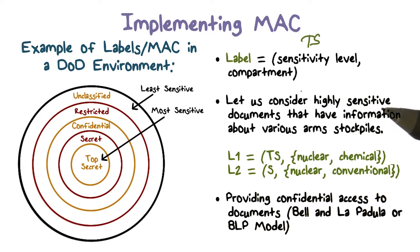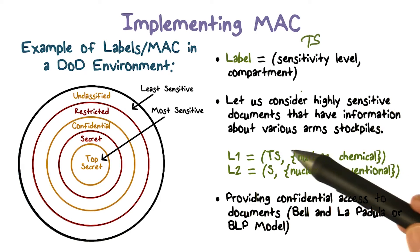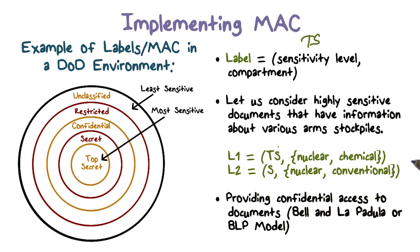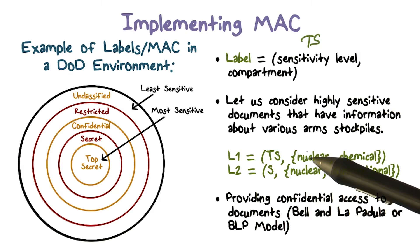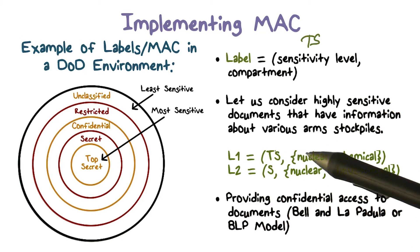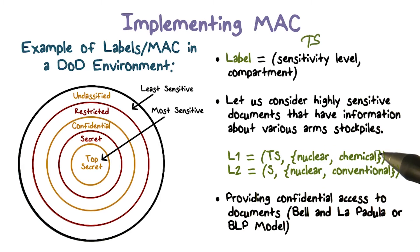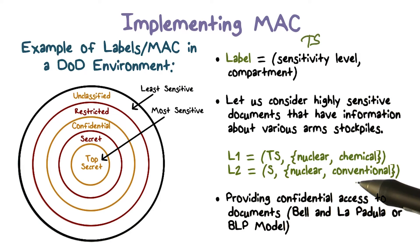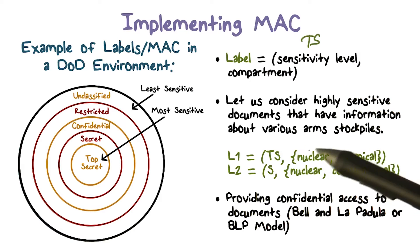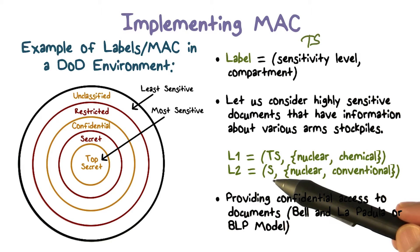Let's look at documents. One that is top secret — let's say these documents have information about various arms stock files. This document talks about nuclear and chemical weapons, which is clearly extremely sensitive. So we say that document is top secret and contains information about both nuclear and chemical weapons. Another document has information about conventional weapons — maybe it's sensitive, but just a notch below, so let's say this one is only secret.